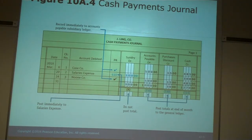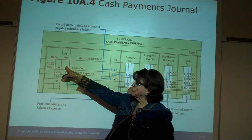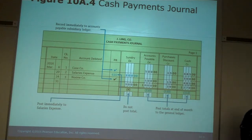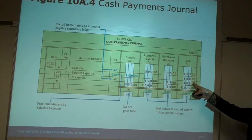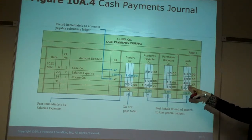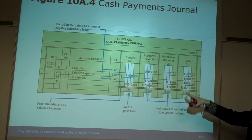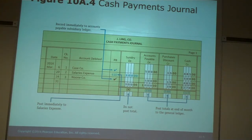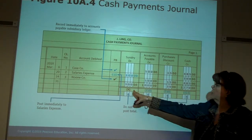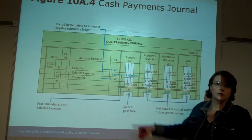Here's the cash payments journal. This would look like your check register — it has an additional column for the check number. For cash payments, we have cash credit, which is always going to be a credit. Purchases discount credit, accounts payable debit, and sundry debit. So we do have some special columns in there. We don't post this total, but we have to post this one individually.